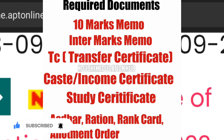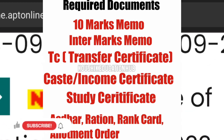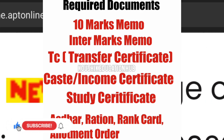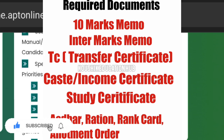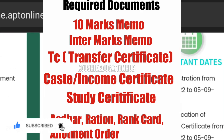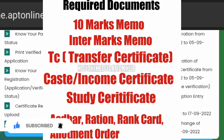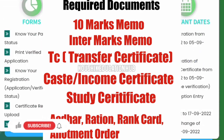The next is the study certificate. You have to complete your entry, school, schooling. You have to complete your study certificates in school and college. The important thing is Aadhar Card, Ration Card and Rank Card. Rank Card means that you have to get a rank card. Rank Card is compulsory.